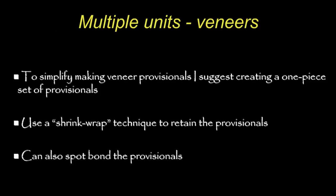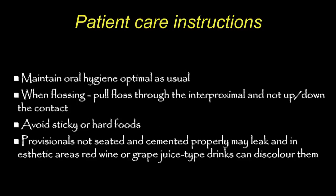For multiple units like veneers, I usually create one piece and use what's called a shrink wrap technique, occasionally spot bonding. For patient care instructions: maintain optimal oral hygiene. When flossing, pull the floss through the interproximal rather than up and down through the contact — just during the provisional stage. Avoid hard and sticky foods. If the provisional isn't properly seated and cemented, it can leak, so avoid red wine, marinara sauce, and grape juice, as these can stain underneath.